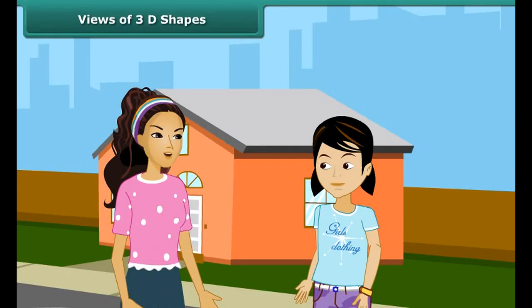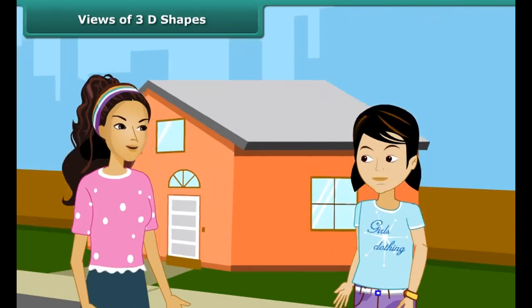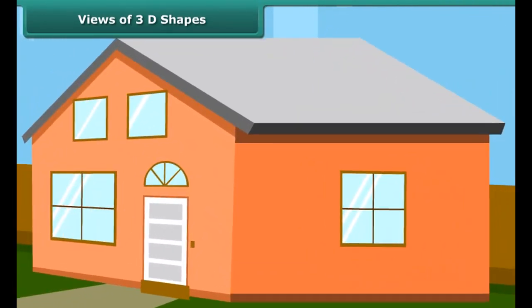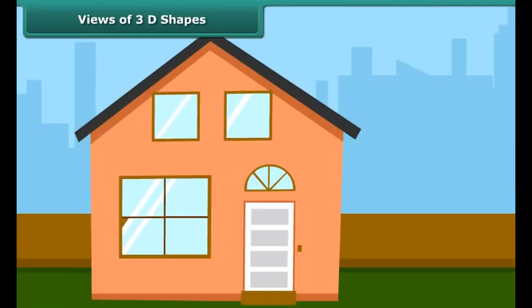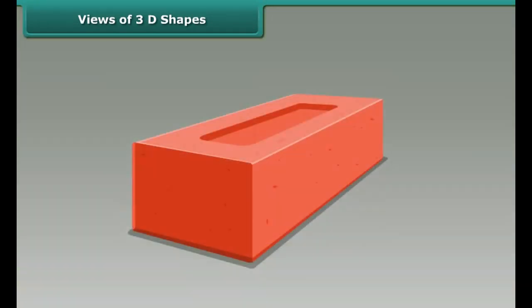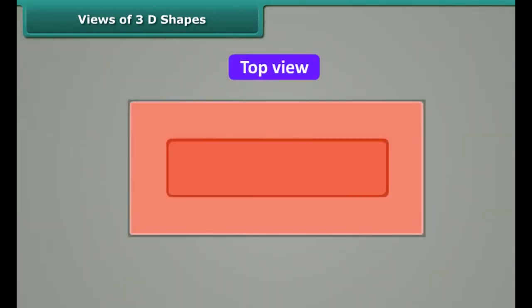Rita, do you know that three-dimensional objects look different from different positions? How? Look at our house — it can have many views. This is the side view of the house, this is the front view, and this is the top view. Similarly, this brick can have different views: top view, side view, and front view.